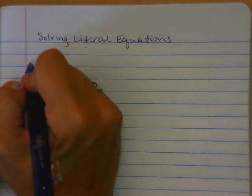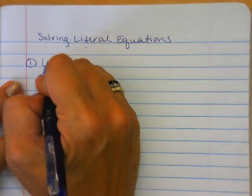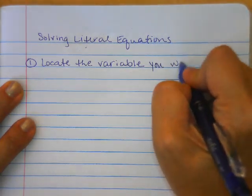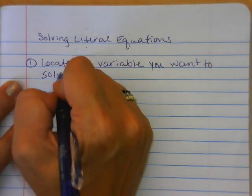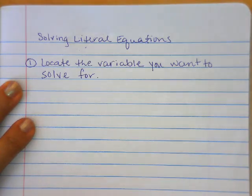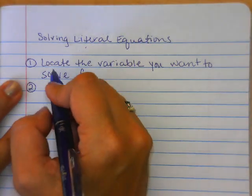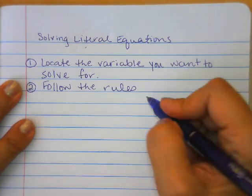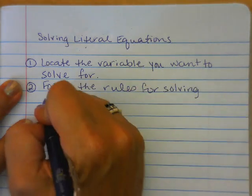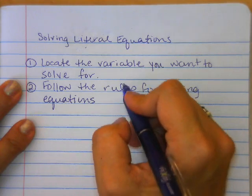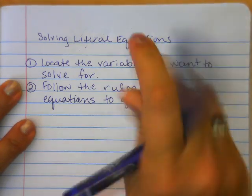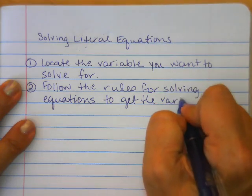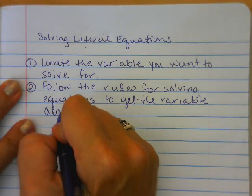So the first thing I want you to make sure you remember in the steps: we are going to locate the variable we want to solve for. That was not a problem on a regular equation because we usually only have one variable, but on a literal you'll see we have multiple. And then the second step is follow the rules or the steps, those five that we've listed for solving equations to get the variable alone and positive.